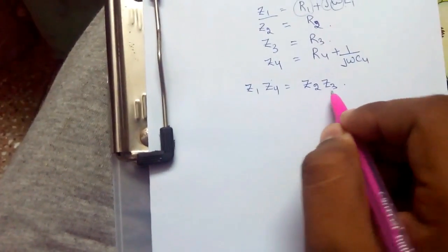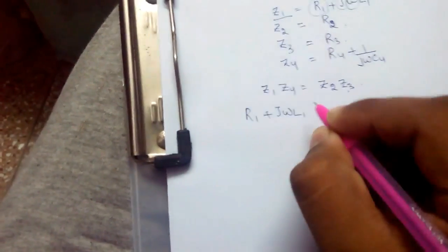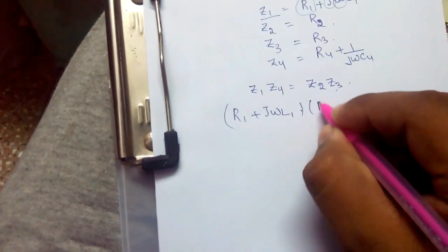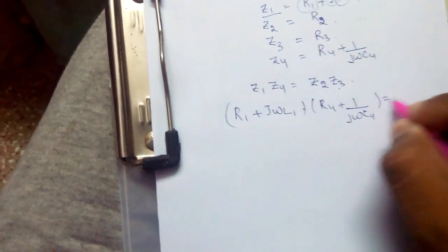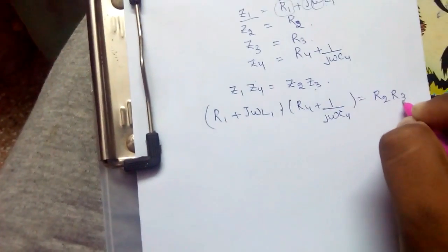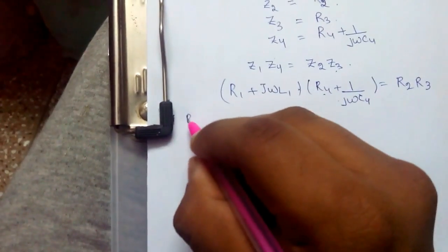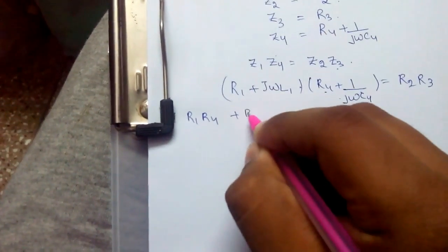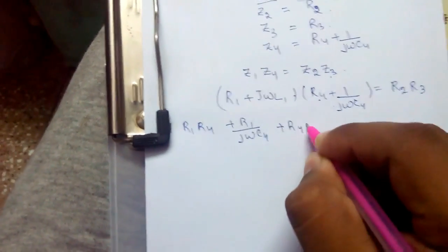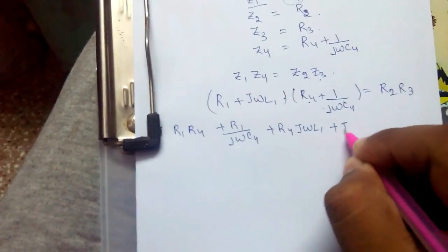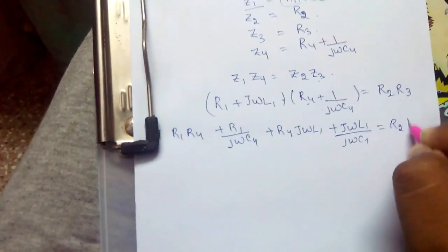At balance, Z1 Z4 equals Z2 Z3. Substituting: (R1 plus J omega L1) into (R4 plus 1 upon J omega C4) equals R2 R3. Therefore, simplifying the equation: R1 R4 plus R1 upon J omega C4 plus R4 J omega L1 plus J omega L1 upon J omega C4 equals R2 R3.